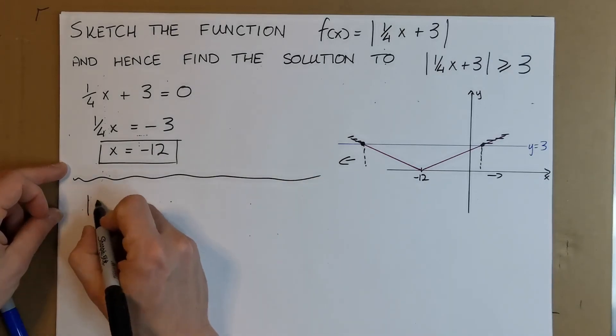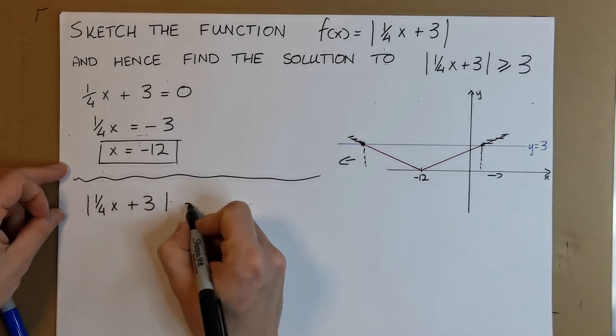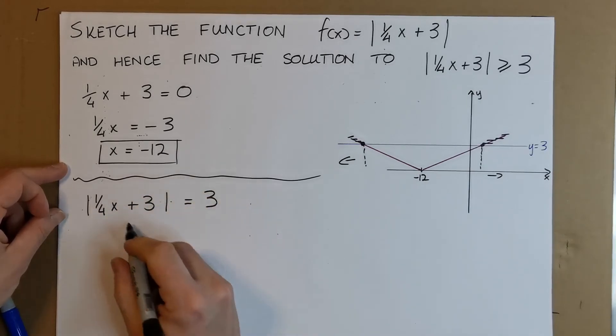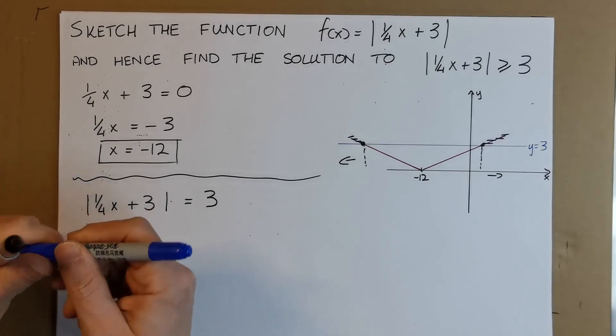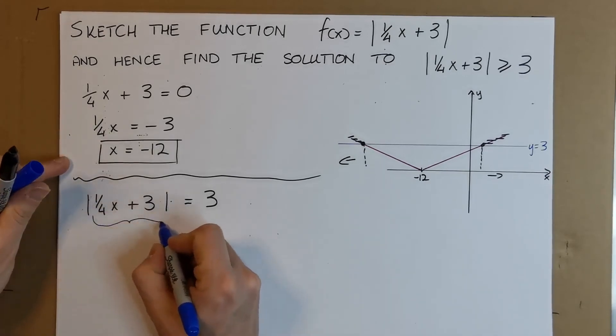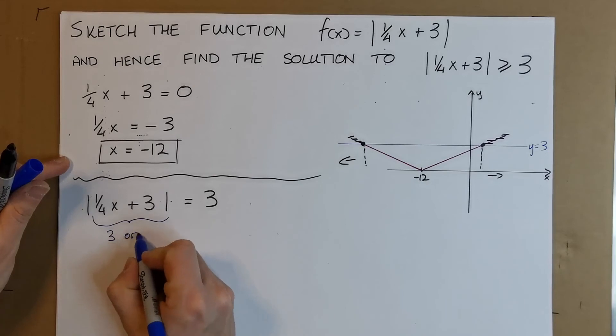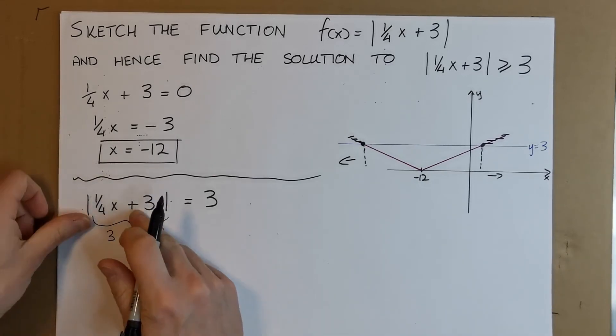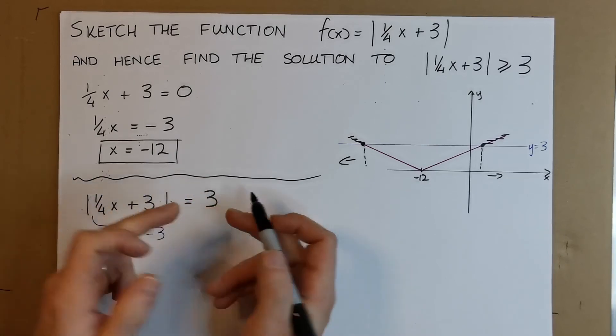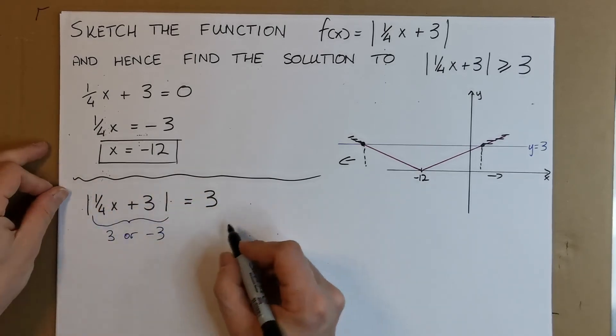Where is |1/4x + 3| equal to 3? The way I think of it: this equals 3 when the stuff inside equals 3 or -3. Because if 1/4x + 3 happens to be -3, the modulus of -3 gives us the +3 we're looking for. Let's make two equations.